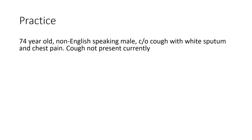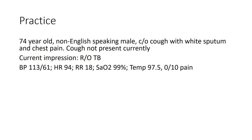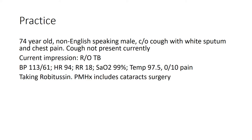Here is another practice scenario. A 74-year-old, non-English-speaking male complains of cough with white sputum and chest pain. Cough is not present currently. The current impression is to rule out TB. His current vitals are 113 over 61, heart rate of 94, respiratory 18, oxygen saturation at 99%, temp 97.5, and currently 0 out of 10 pain. He is taking Robitussin and has a history of cataract surgery. What's his ESI score? You can pause the video and play when you're ready. If you answered an ESI Level 3, you would be correct.